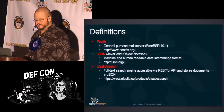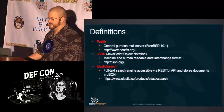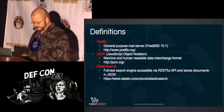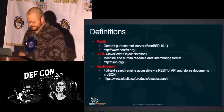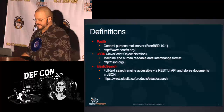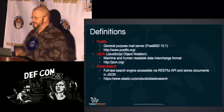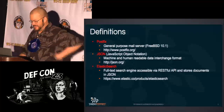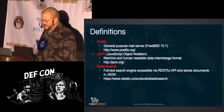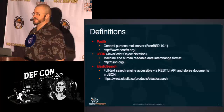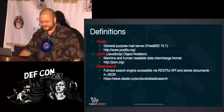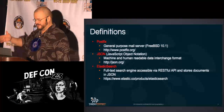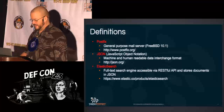PostFix is a general purpose mail server — I prefer it on FreeBSD because I have a lot of experience hardening it. JSON is JavaScript Object Notation, a machine and human readable data interchange format. Elasticsearch is a full-text search engine accessible via REST API that stores documents in JSON — perfect for searching through and finding commonalities among spam campaigns.